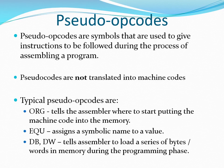Pseudo opcodes are symbols in the assembly program used to give instructions to be followed during the process of assembling the program. They themselves are not translated into machine codes but are only used to give information as to how the program should be assembled.